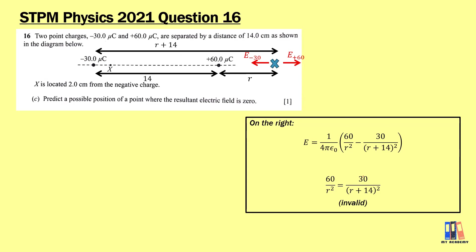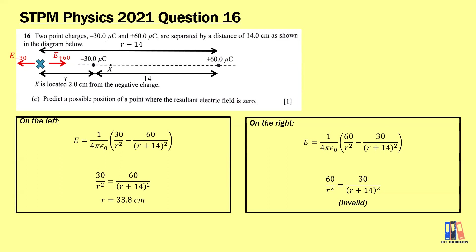Now analyzing the position on the left side: the electric fields are interchanged based on the charge types. Setting 30 over (R+14)² equal to 60 over R² gives a solvable equation. Solving gives R = 33.8 cm, which is the position 33.8 cm to the left of the negative charge where the resultant electric field is zero.